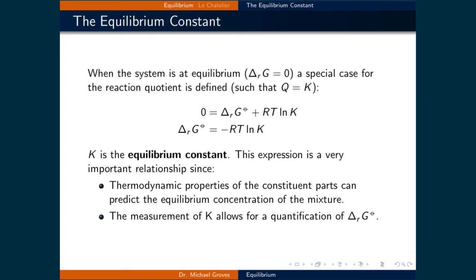When the system is at equilibrium, meaning ΔG of the reaction equals zero, a special case for the reaction quotient occurs. At equilibrium we define Q equal to K, so the expression becomes 0 equals ΔG°_rxn plus RT ln K. Rearranging, we get ΔG°_rxn equals negative RT times the natural logarithm of K, where K is the equilibrium constant. This expression is a very important relationship since, first, the thermodynamic properties of the constituent parts can predict the equilibrium concentration of the mixture, and second, the measurement of K allows for the quantification of the standard change in Gibbs free energy for the reaction.